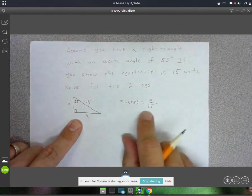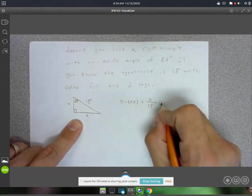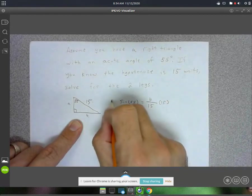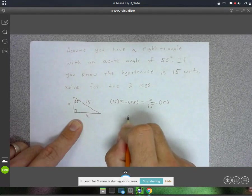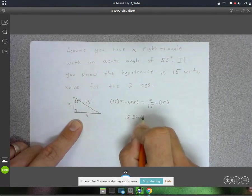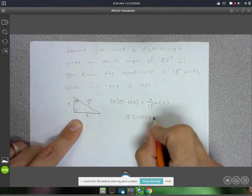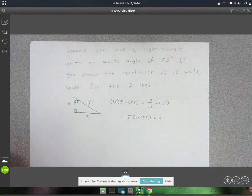Alright, and then to solve this equation, you just multiply by 15. So 15 sine of 55 is equal to B.